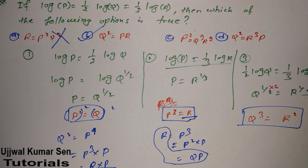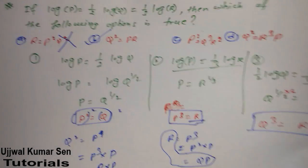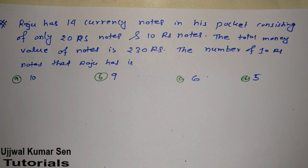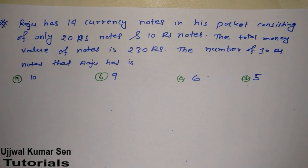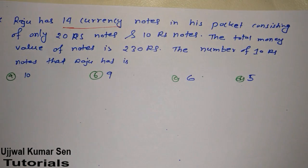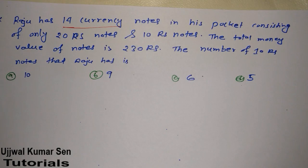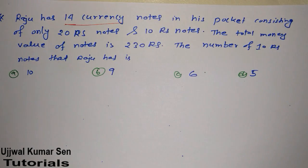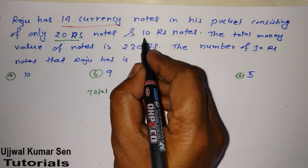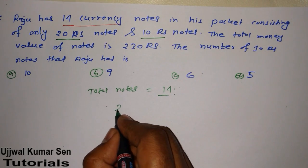Now let's move to the third problem — this one has a different angle and a different approach. In this question, Rajoo has 14 currency notes. Since GATE is an online examination, you need paper to write down what you're getting. Now, total notes = 14, consisting of ₹20 and ₹10 notes.